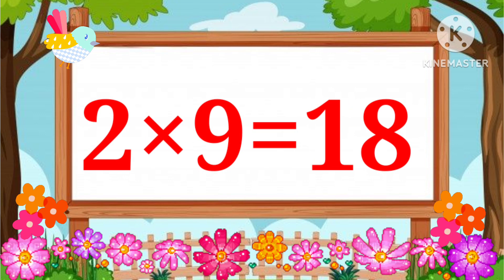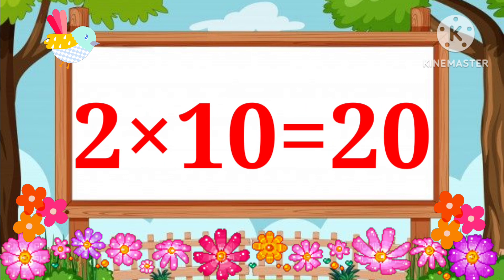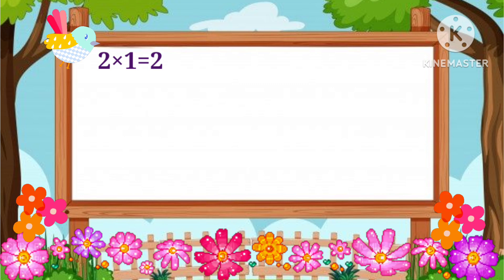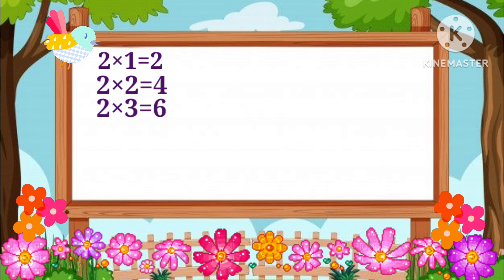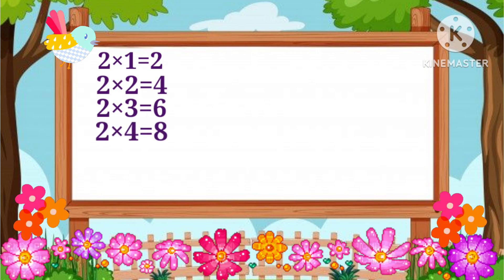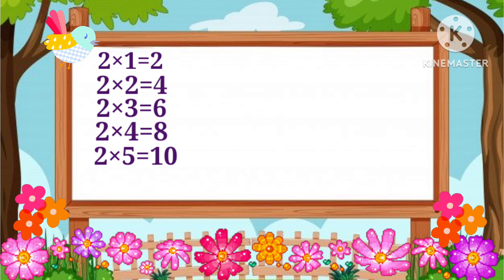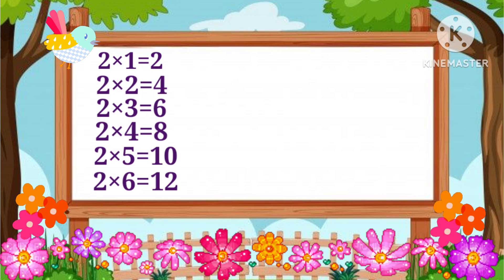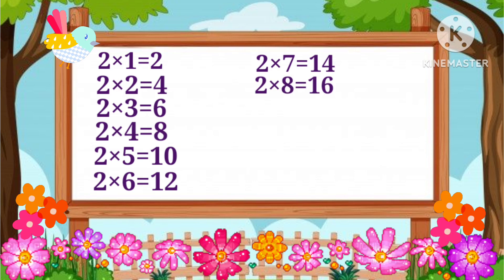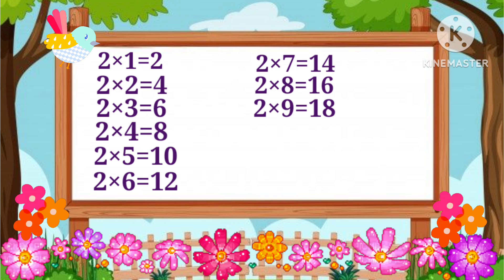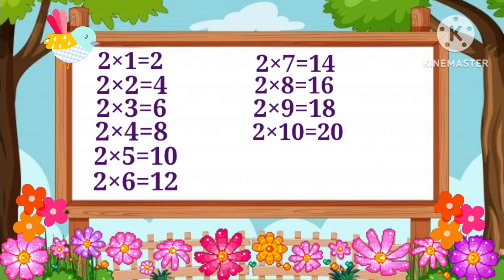2 nine's a 18, 2 ten's a 20. 2 one's a 2, 2 two's a 4, 2 three's a 6, 2 four's a 8, 2 five's a 10, 2 six's a 12, 2 seven's a 14, 2 eight's a 16, 2 nine's a 18, 2 ten's a 20.